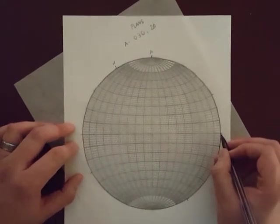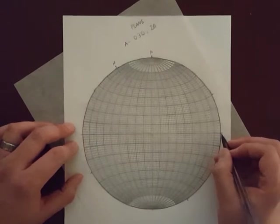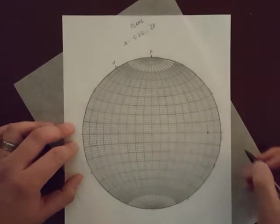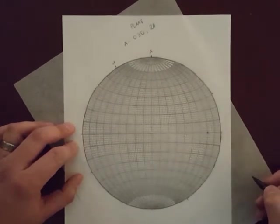So from here, from the dip direction, I'm going to count in the dip angle. 10, 20. So there's where dip plots on the stereonet.